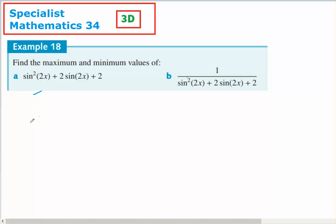I know that the sine of 2x has a period of π, its maximum will be 1 and its minimum will be negative 1, so the maximum that sine of 2x can equal is going to be 1.